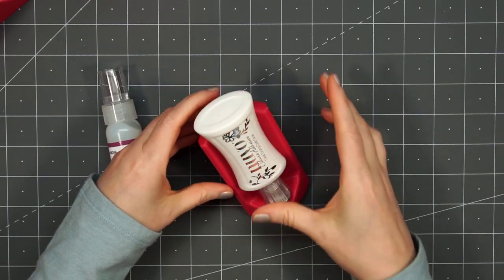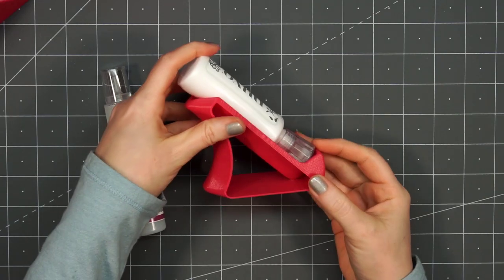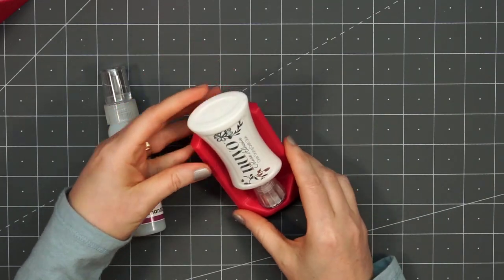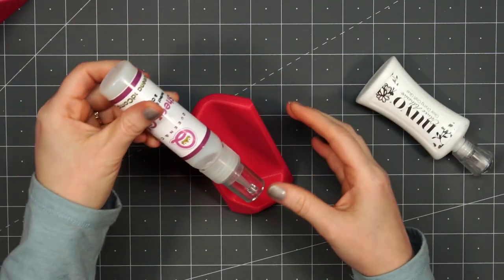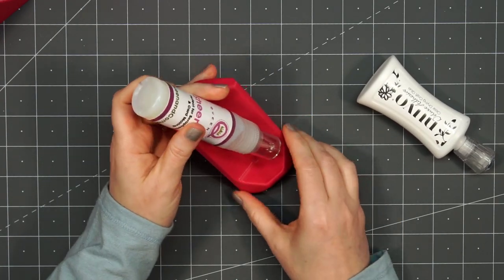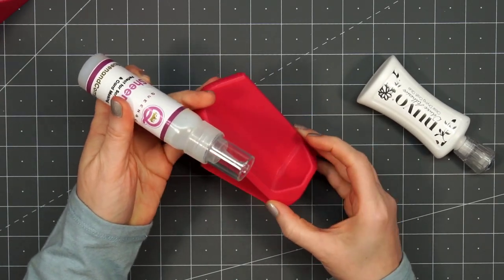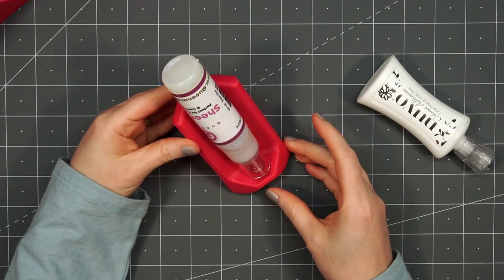Here's a bottle of Nuvo glue. You can see it just sits in there perfectly. Here's some Sheer glue by Queen & Company. It has that little dip in the very base so that way it's not going to fall out.